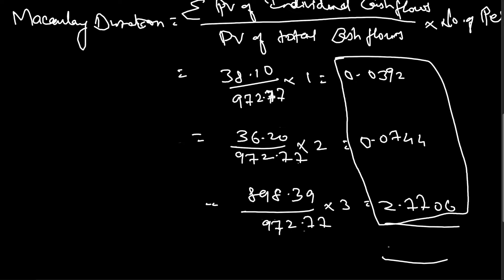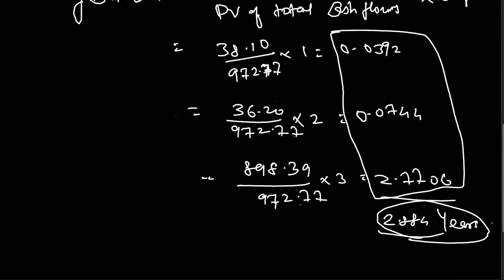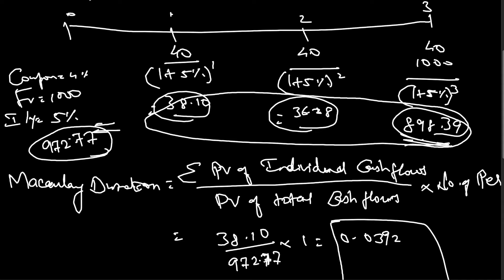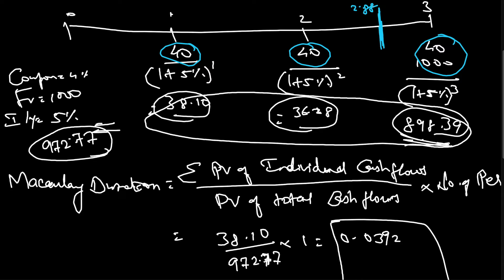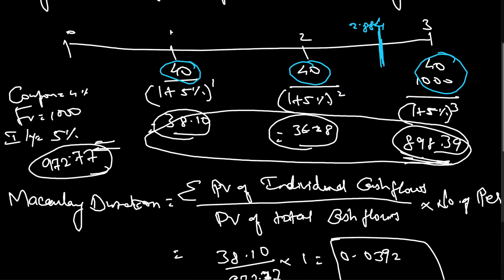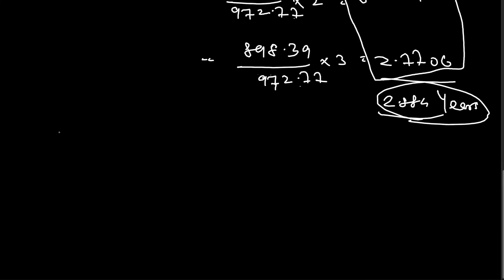Adding all three weighted values gives 2.884, and we suffix this with years. So it will take 2.884 years to receive all the cash flows in one go. Instead of receiving 40 here, 40 here, and 1040 at the end, if you want everything in one payment it takes 2.884 years. This is the Macaulay duration — the weighted average number of years to pay the cash flows of a bond in one go.